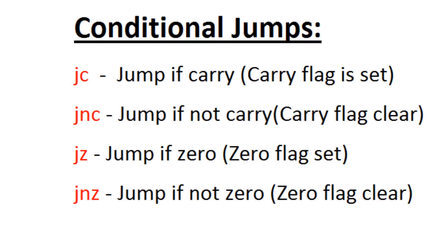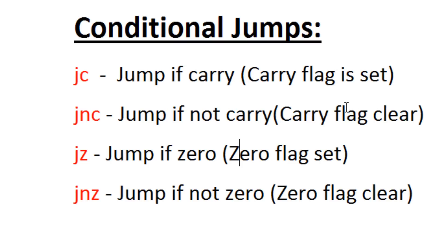The next one is JNZ, jump if not zero. So if the zero flag is not set and the zero flag is clear, then you will jump. We use the jump instructions together with the comparison instruction, and the comparison instruction compares operands. The operands are not affected, but the flags are affected. The jump instruction looks at the flag; if that certain flag is set, then the jump happens. If it's not set, then it won't happen.